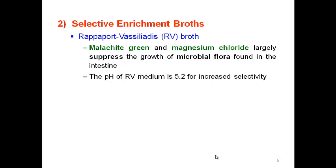The second step is selective enrichment using RV and TT broth. RV broth has two selective agents — malachite green and magnesium chloride — that can help to suppress other microflora. Its low pH also gives additional selectivity.